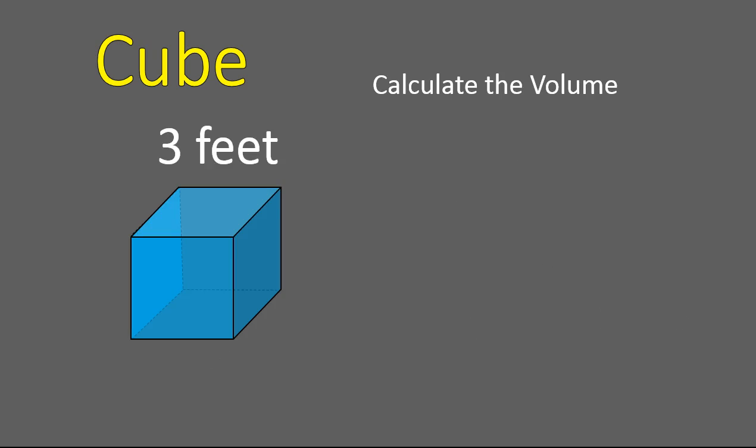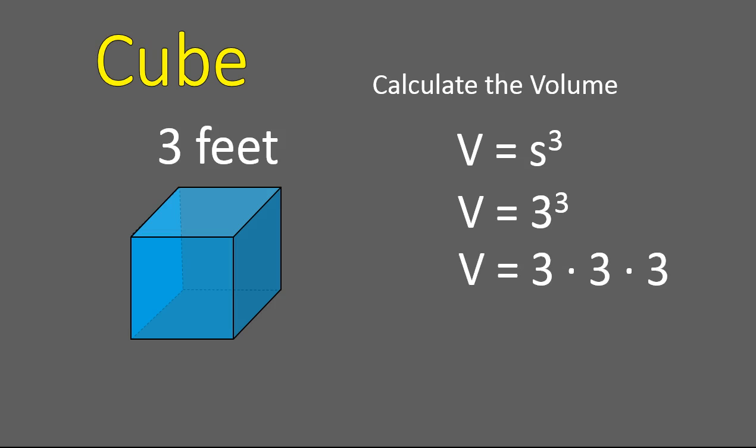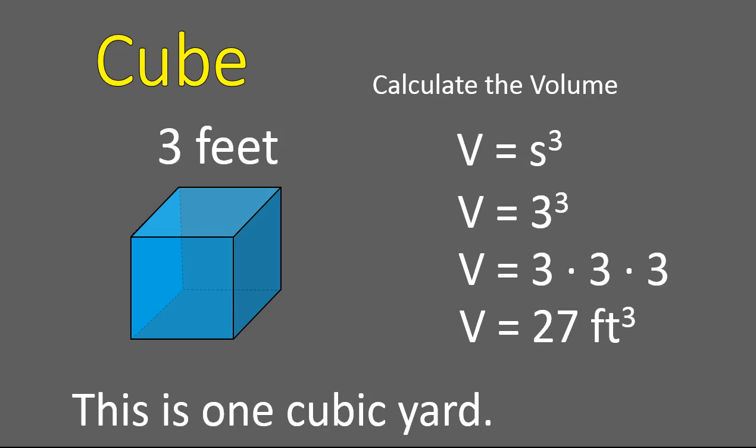Here's another one for you to solve. See how many cubic feet are inside of this cube. Volume is the side cubed — three to the power of three, which is three times three times three — giving 27 cubic feet. Some of you might have noticed three feet is also equal to one yard. This measurement is often used when calculating something like pouring cement — 27 cubic feet inside of one cubic yard.